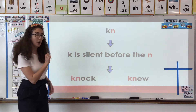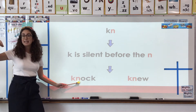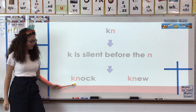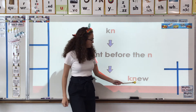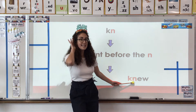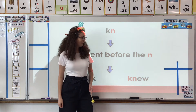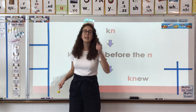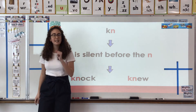Let's see if we can decode these words with that knowledge. K and N at the beginning of a word says nn — so the word is knock, to knock on a door. Good job. Over here, K and N at the beginning of a word says nn — so the word is knew. Knew is the past tense of to know. I knew something in the past — yesterday, I knew that. So this was the first silent letter team that we learned about.